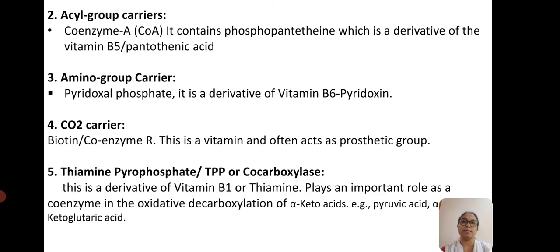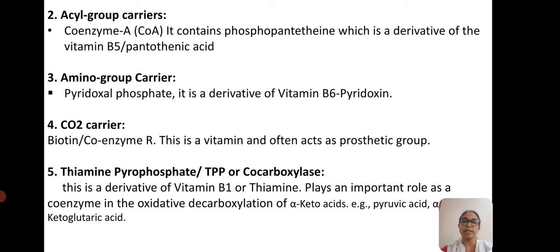The next type is acyl group carriers. Coenzyme A (CoA) is one such coenzyme. It contains phosphopantotheine, which is the derivative of vitamin B5, pantothenic acid. Then come the amino group carriers: pyridoxal phosphate, the derivative of vitamin B6 (pyridoxin), assists in carrying the amino group and activating the enzyme's active site. Carbon dioxide carriers, called coenzyme R, are derivatives of biotin, a vitamin.